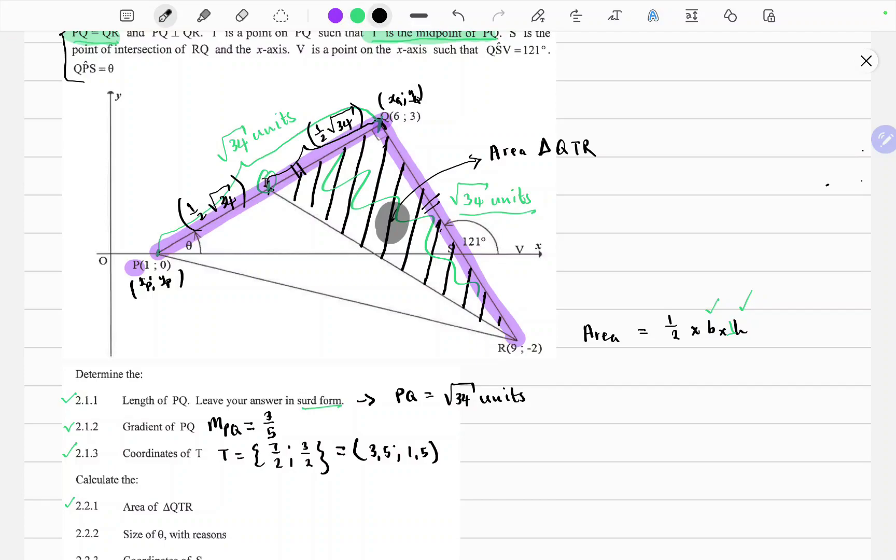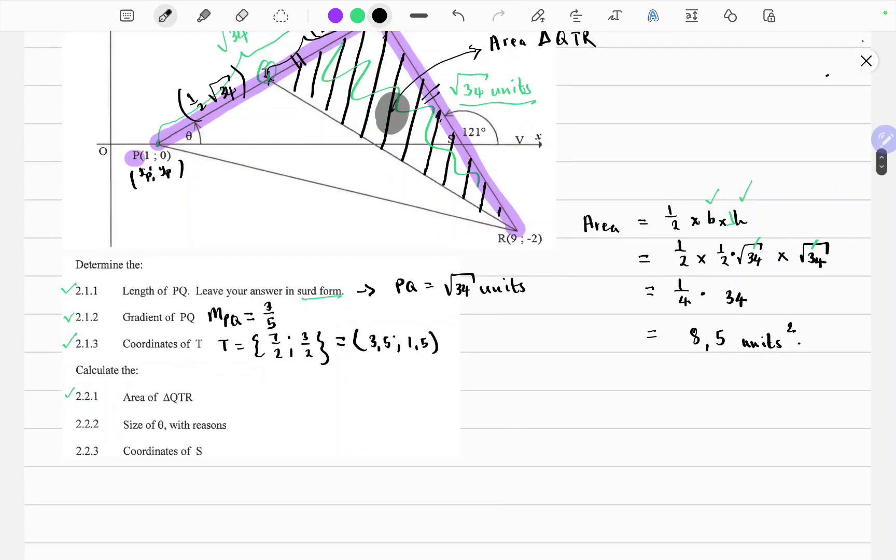So now we can just substitute it all into the formula. So this is equal to half times the base. The base is half square root of 34 times square root of 34. So half and half is quarter and square root of 34 times square root of 34, these two cancel each other out. So we're left with 34. So this should give us 8.5 units squared because we're dealing with area.